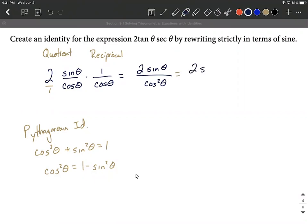So we have 2 sine of theta all over 1 minus sine squared of theta. And again, this was just based on the Pythagorean identity, which is what allowed us to replace that denominator with 1 minus sine squared.